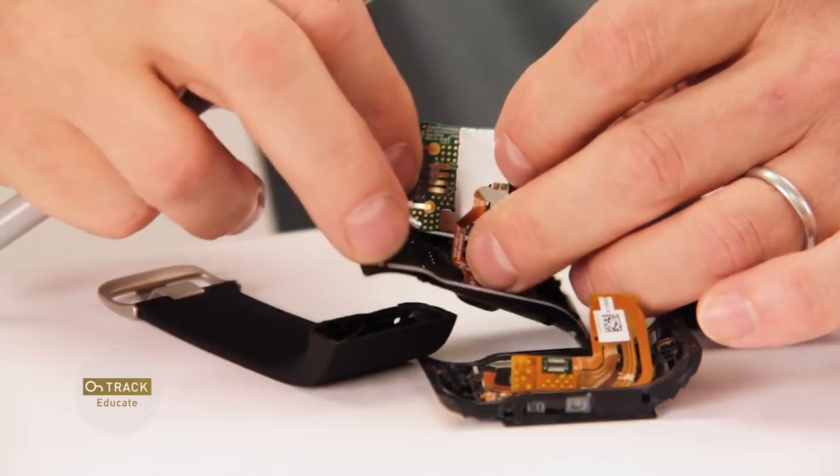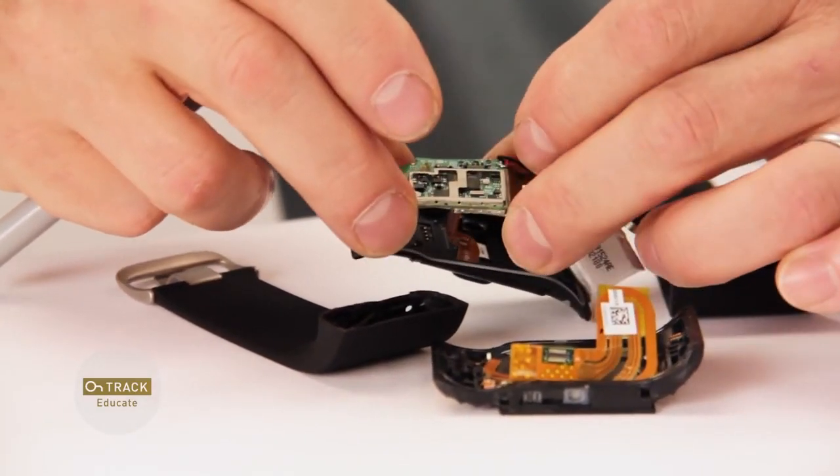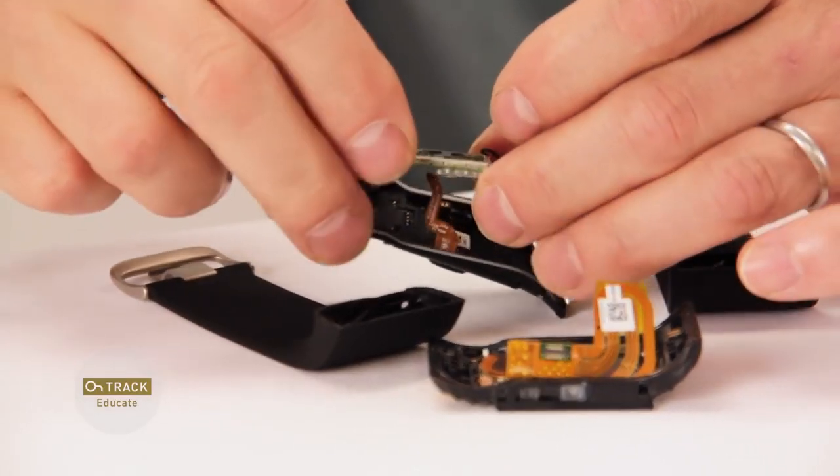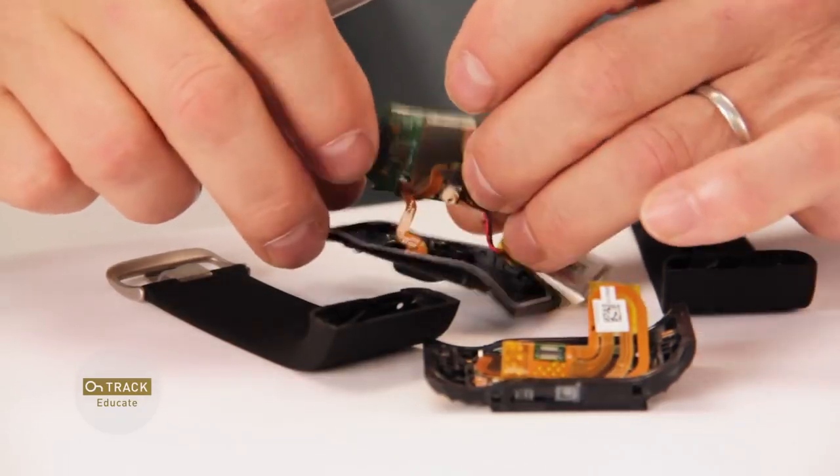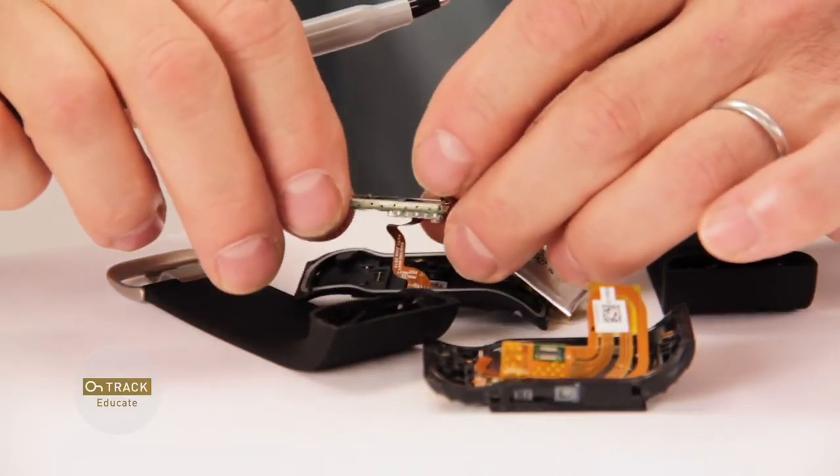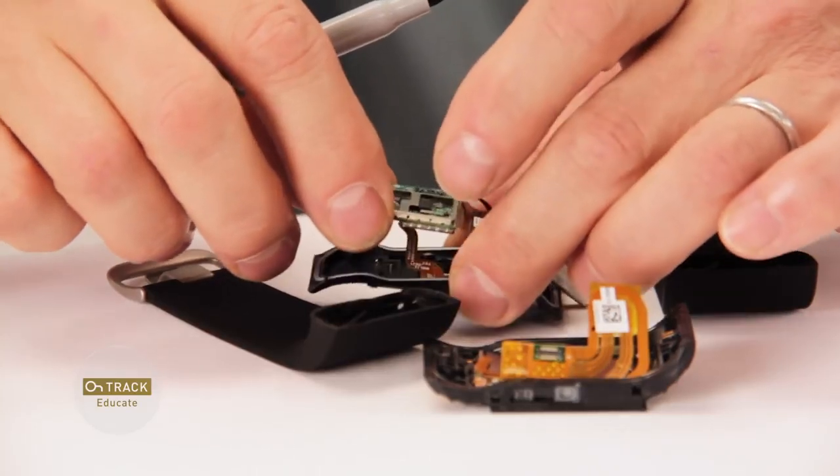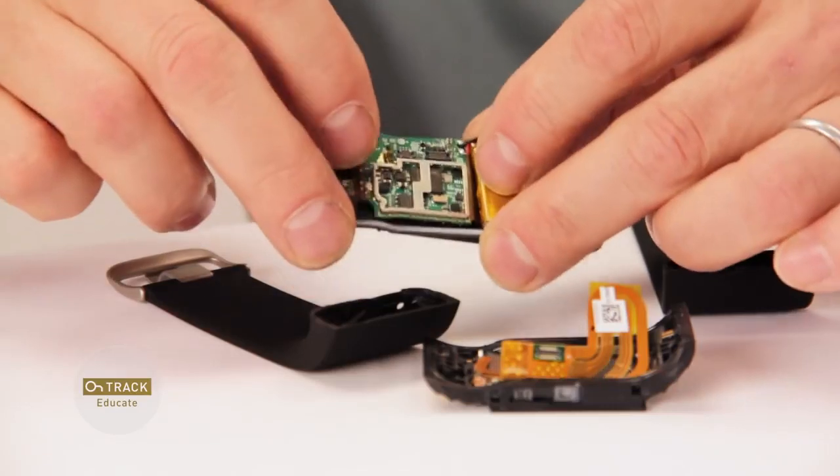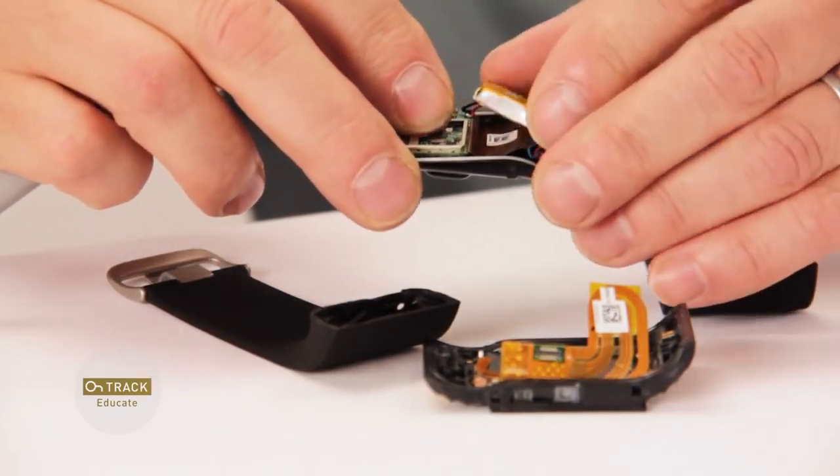And the main board is where it's all happening. This has quite a bit. It's a 32-bit processor with some flash memory, and it has a GPS module, and it has a Bluetooth and wireless connection. There's quite a bit going on in this system that all needs to be packaged very compactly for it to fit on the wrist.